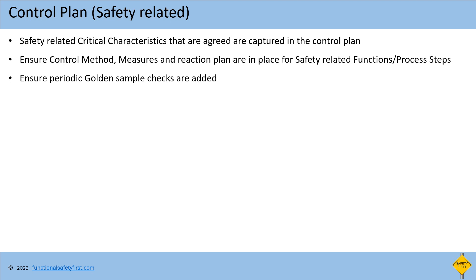Control plan for safety related items: the special characteristics identified in PFMEA will be brainstormed with the manufacturing team, and based on agreement, the special characteristics having real impact in manufacturing will be inherited to the control plan. Additionally, the control plan shall ensure the control methods, measures, and reaction plan for each safety related function or process step, and should also ensure that periodic golden sample checks are added.